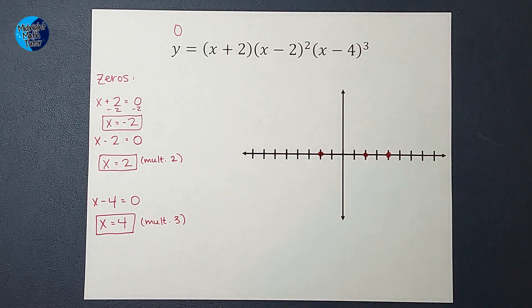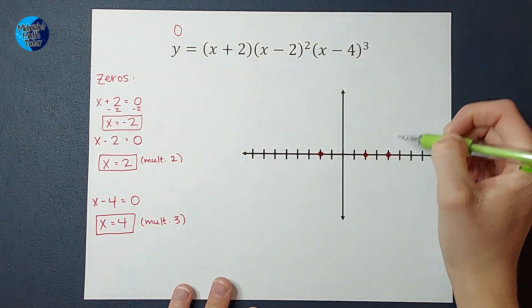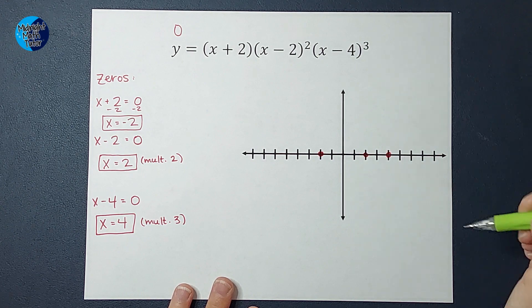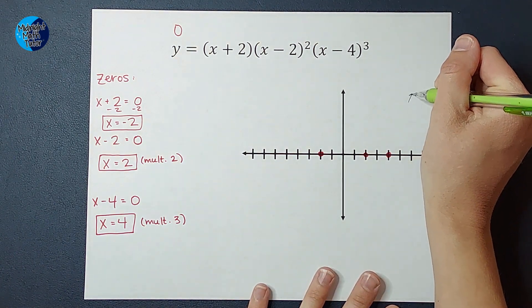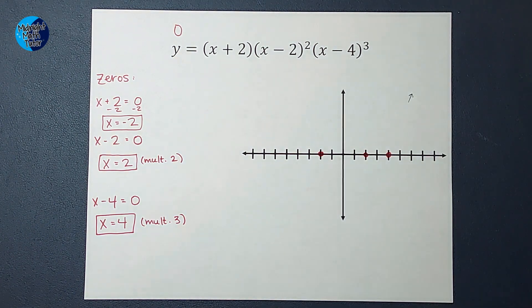If my leading coefficient is positive, this side is going to end up. If it's negative, it's going to end down. So it's positive. So I know the right side of my graph is going to end up.